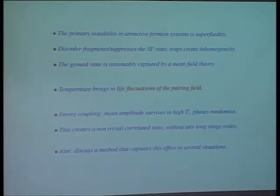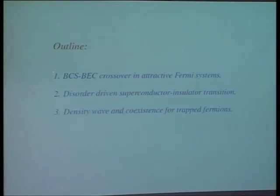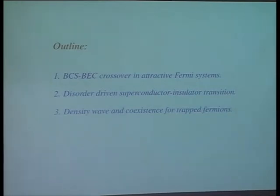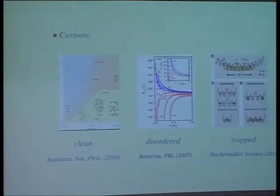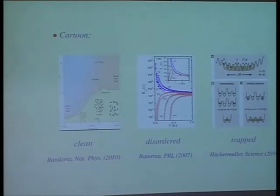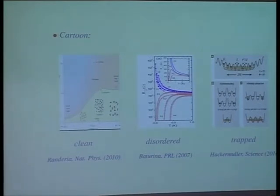I will not be able to get into experimental details about these three cases. Moe has shown something yesterday. I will just show a snapshot today on the BCS-BEC problem. Pratap will have an entire talk on disorder-driven superconductive-insulator transitions. And you have seen several view graphs on trapped fermions. So there is just a one-page cartoon, three pictures. The first one from Mohit — you saw a much better version of this yesterday — which shows the BCS-BEC crossover in the clean continuum system.